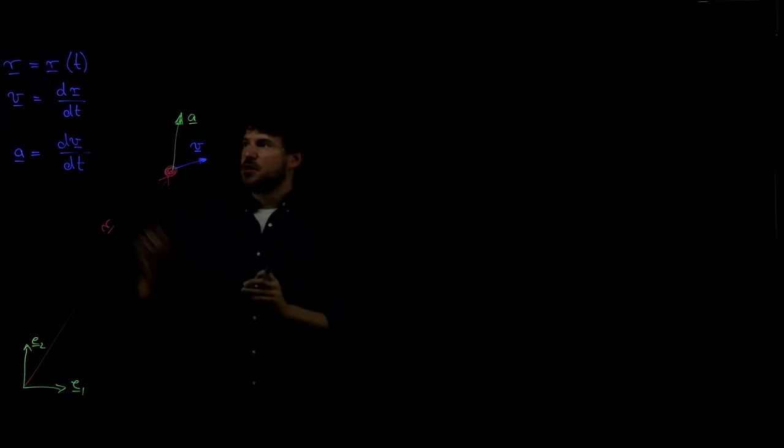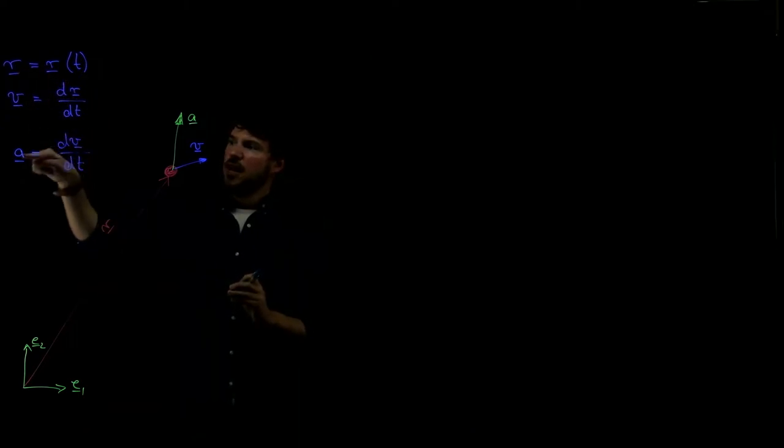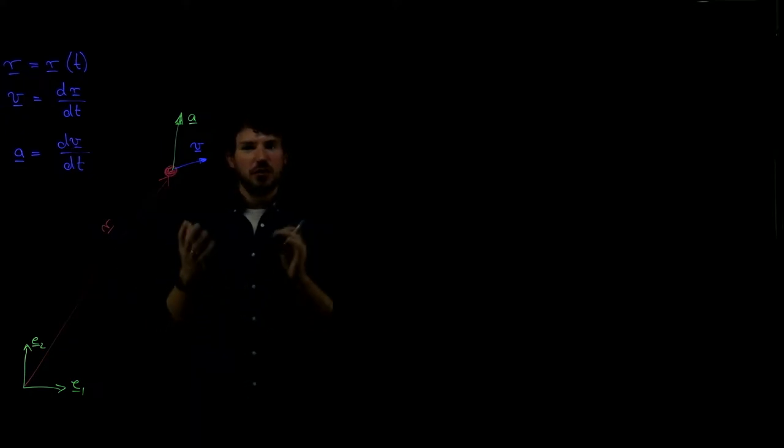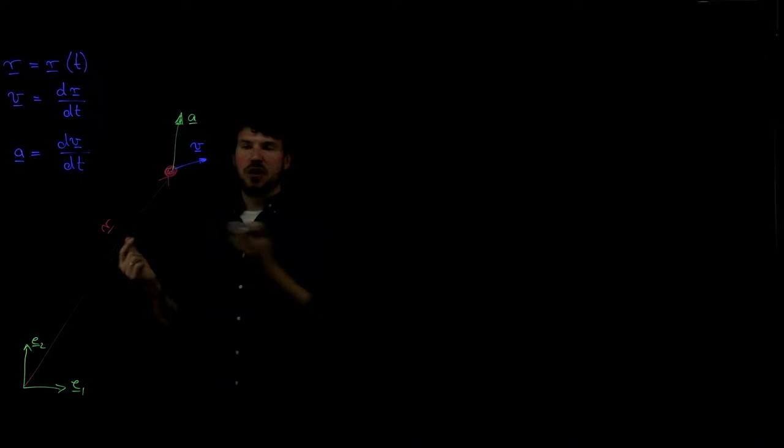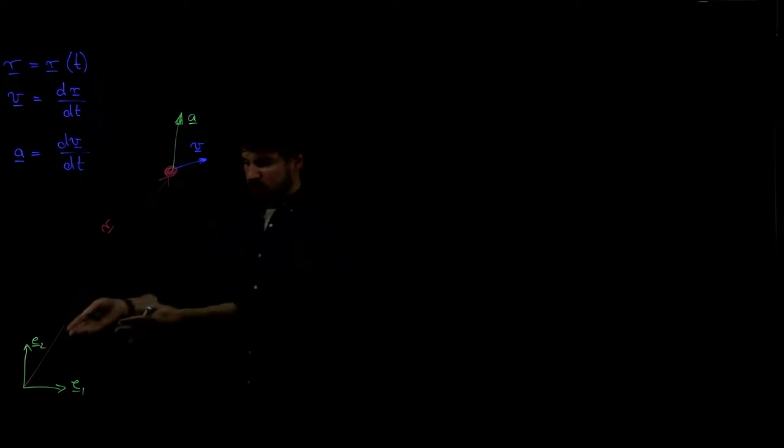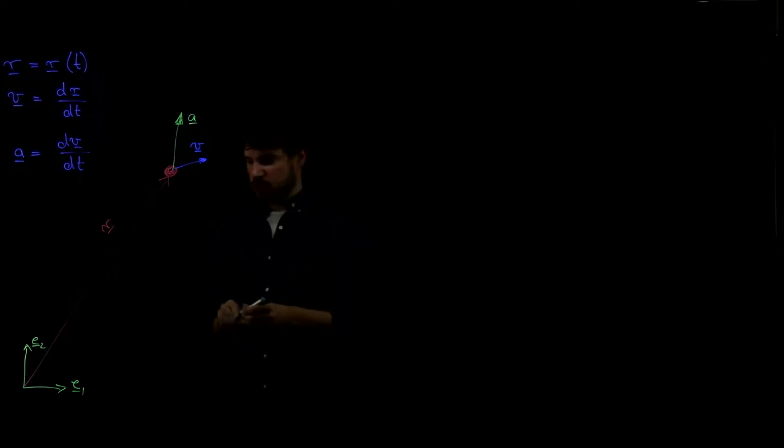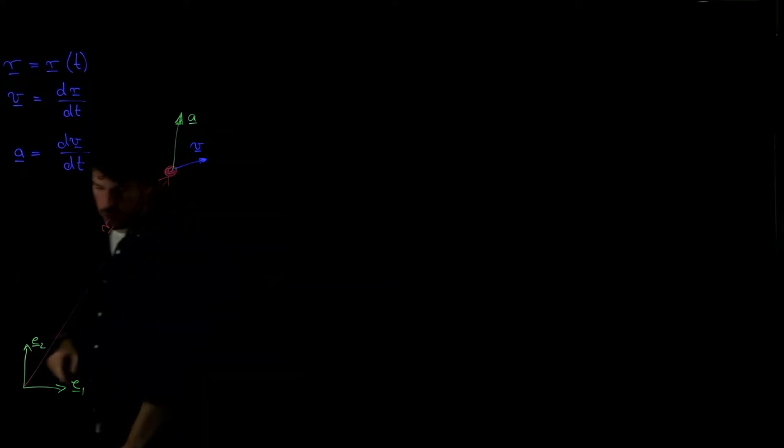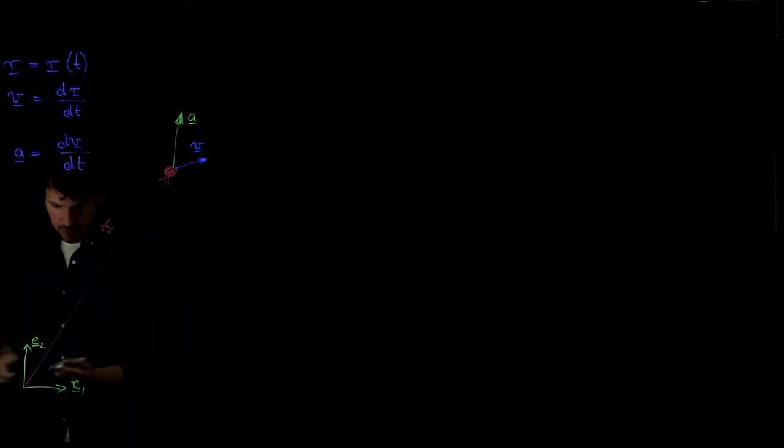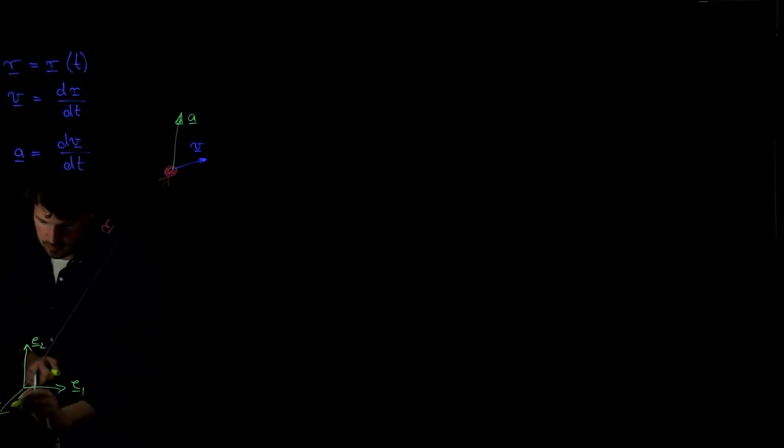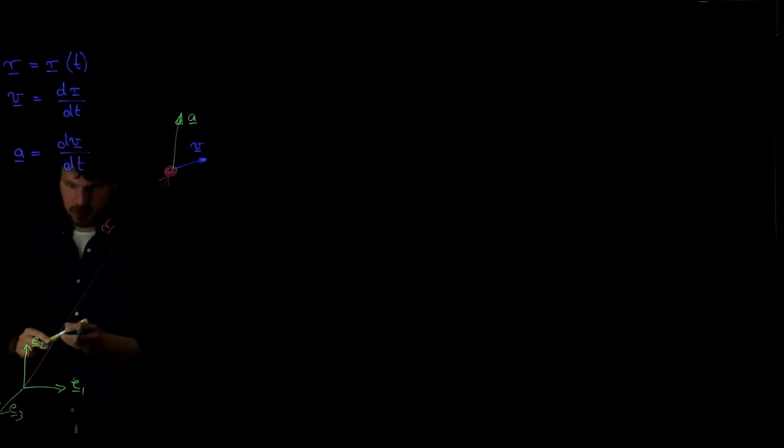The most important point here is that r, v, and a, all of those are vectors. And we have to be very careful when we work with vectors and we differentiate them, because we can express them in many different frames. What we see down here is a Cartesian coordinate system, a fixed one. e1, e2, and possibly also e3 are fixed in space. They're not moving, they're not changing. And that's our fixed Cartesian coordinate system.